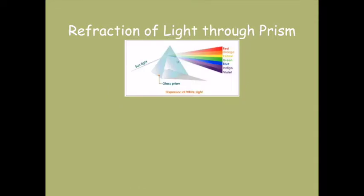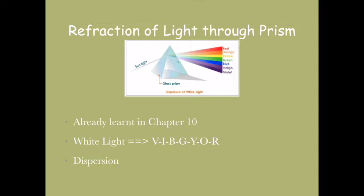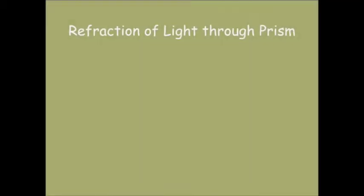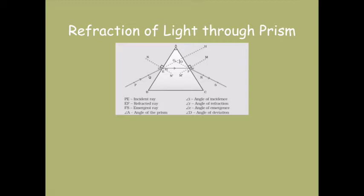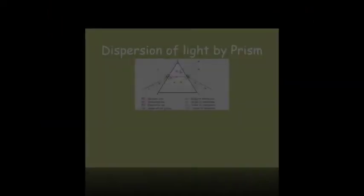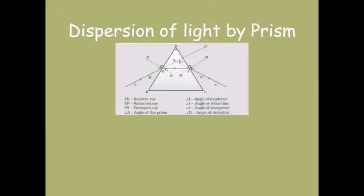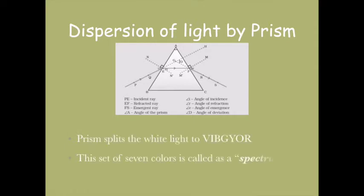Let's move on to refraction of light through a prism, which we already started in chapter 10. White light splits into seven colors. This phenomenon is called dispersion. Now let's study dispersion of white light by the prism. We all know the prism splits white light into VIBGYOR, and these seven colors are called a spectrum.